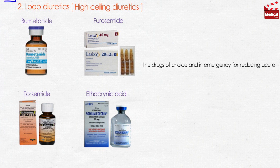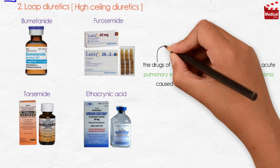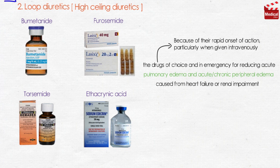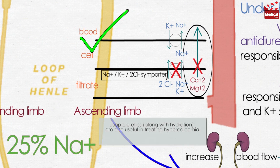Loop diuretics are the drugs of choice and are useful in emergencies for reducing acute pulmonary edema and acute or chronic peripheral edema caused by heart failure or renal impairment, because of their rapid onset of action, particularly when given intravenously. Loop diuretics, along with hydration, are also useful in treating hypercalcemia, because they stimulate tubular calcium excretion.